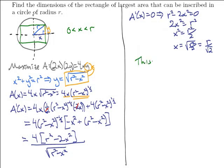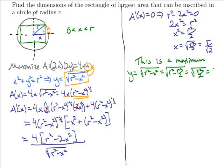This is going to give us a maximum area. Now what's the y value? Well, y is equal to the square root of r² - x² by the Pythagorean theorem. That's the square root of r² minus x² is r²/2. So that's the square root of r²/2, which is r/√2. So x equals y and so we are going to have, in fact, a square that gives us the maximum area.